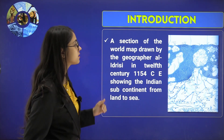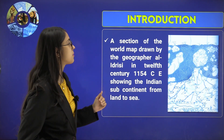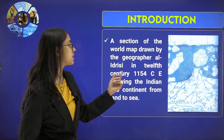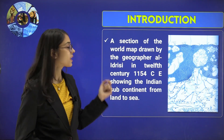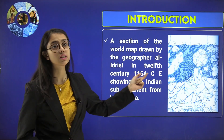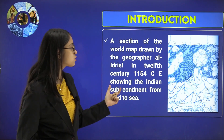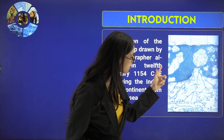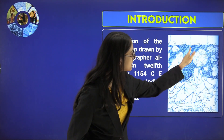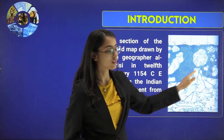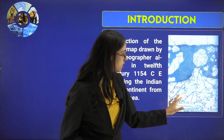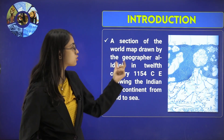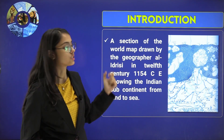Here in this section is a world map drawn by a geographer Al Idrisi in the 12th century, in the year 1154 CE. This shows the Indian subcontinent from land to sea. As you can see, there is a sea area and the land as well. This map was drafted by the geographer Al Idrisi.